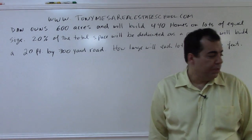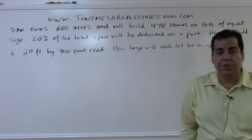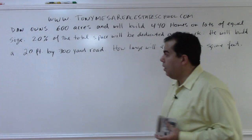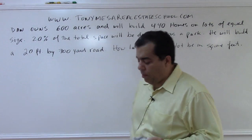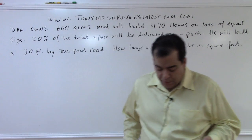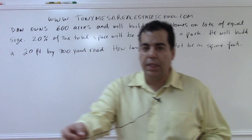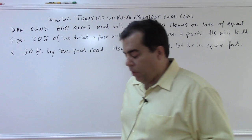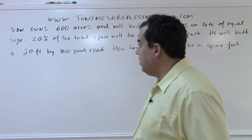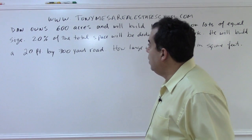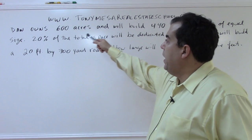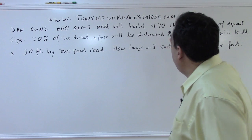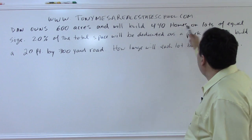Hi, I'm Tony Mesa with Tony Mesa Real Estate School, and we're going to go through a problem that deals with a developer owning a piece of land and building houses on lots of equal size. The question is: Dan owns 640 acres and will build 440 homes on lots of equal size.